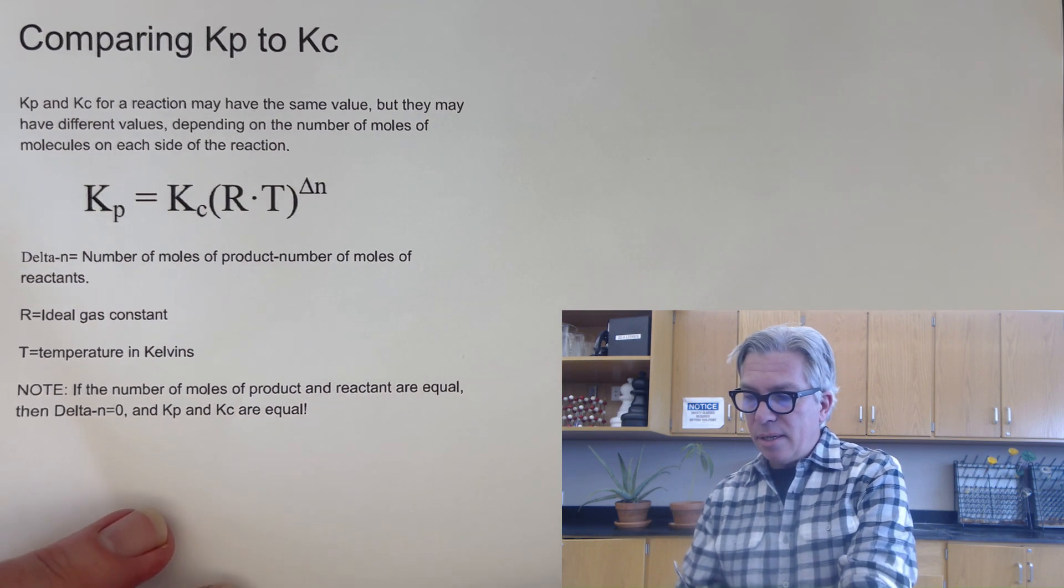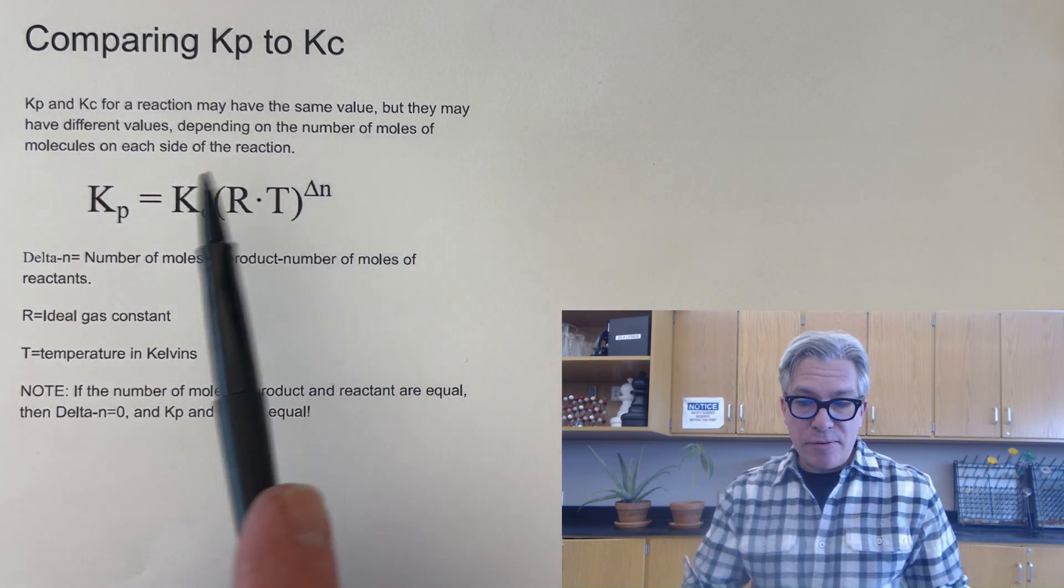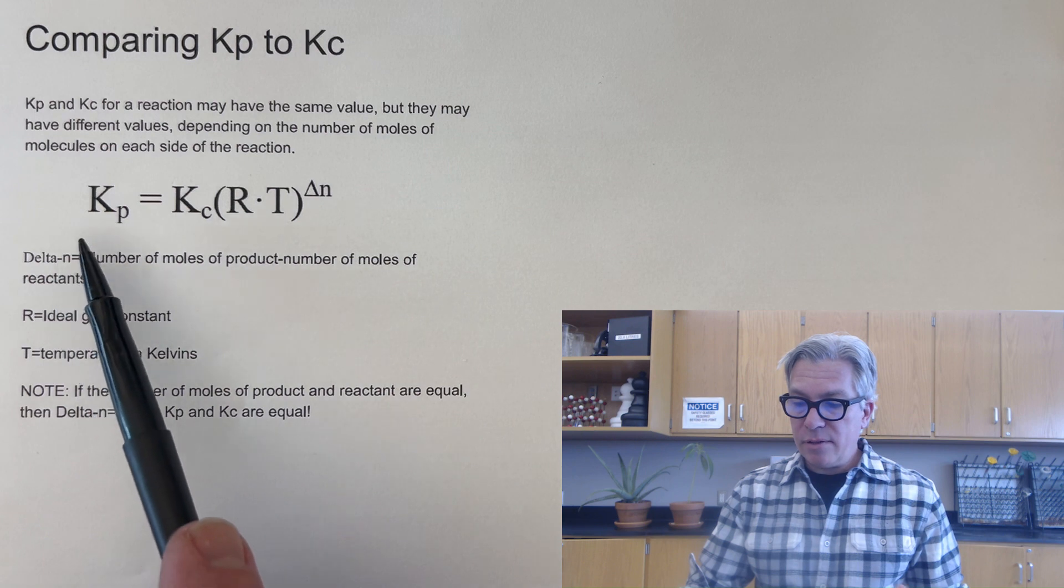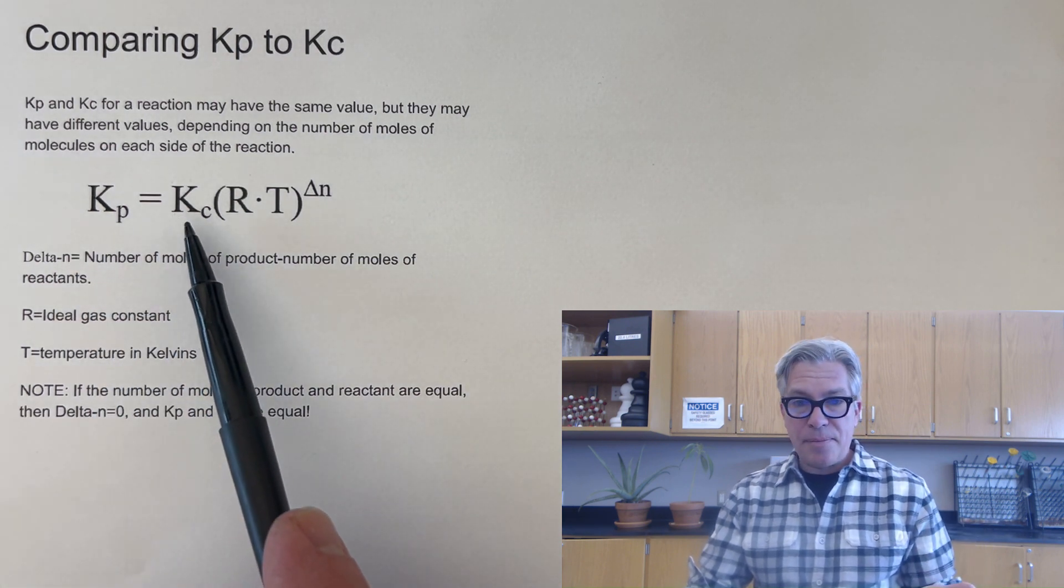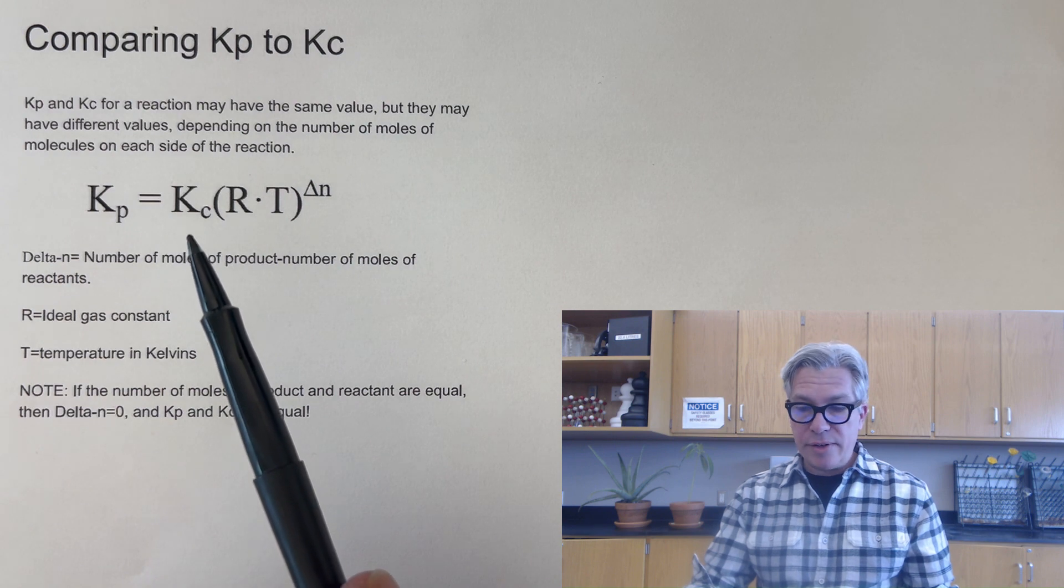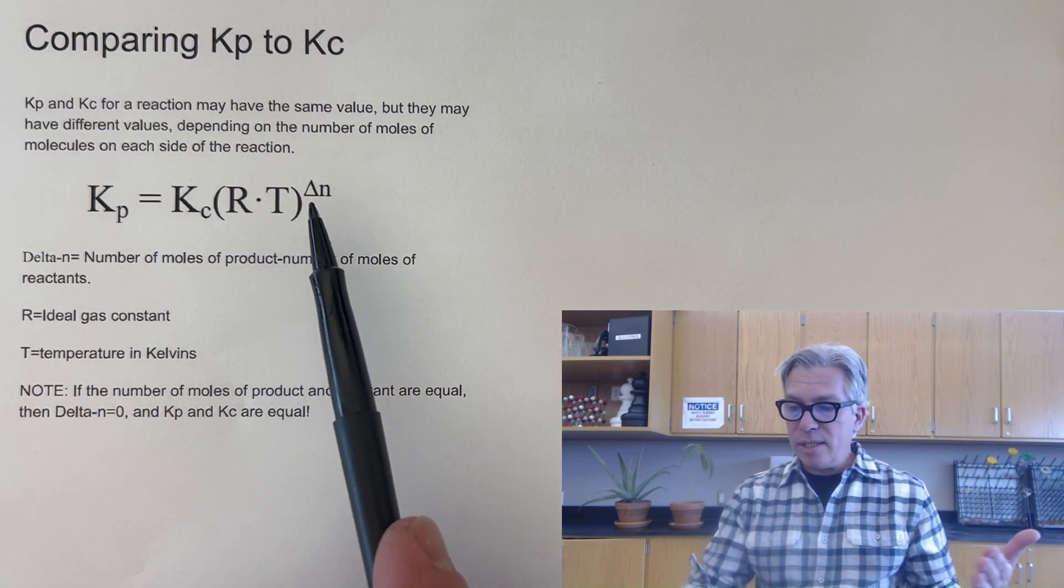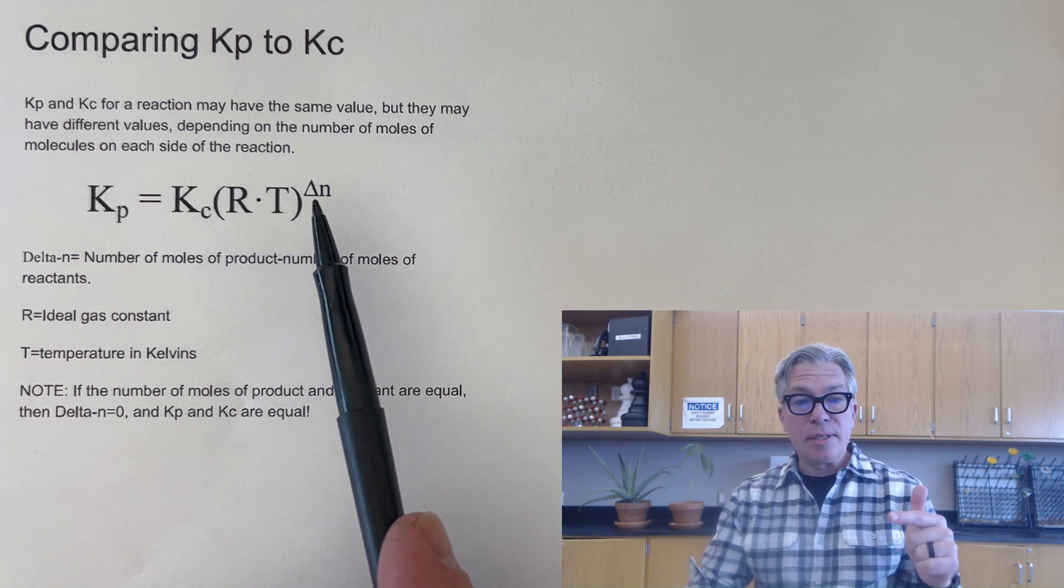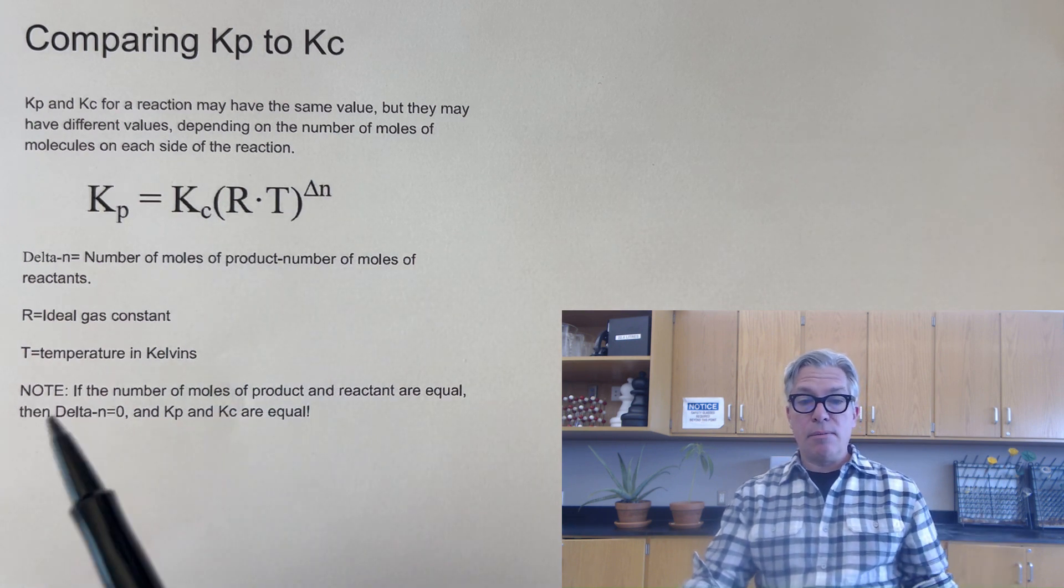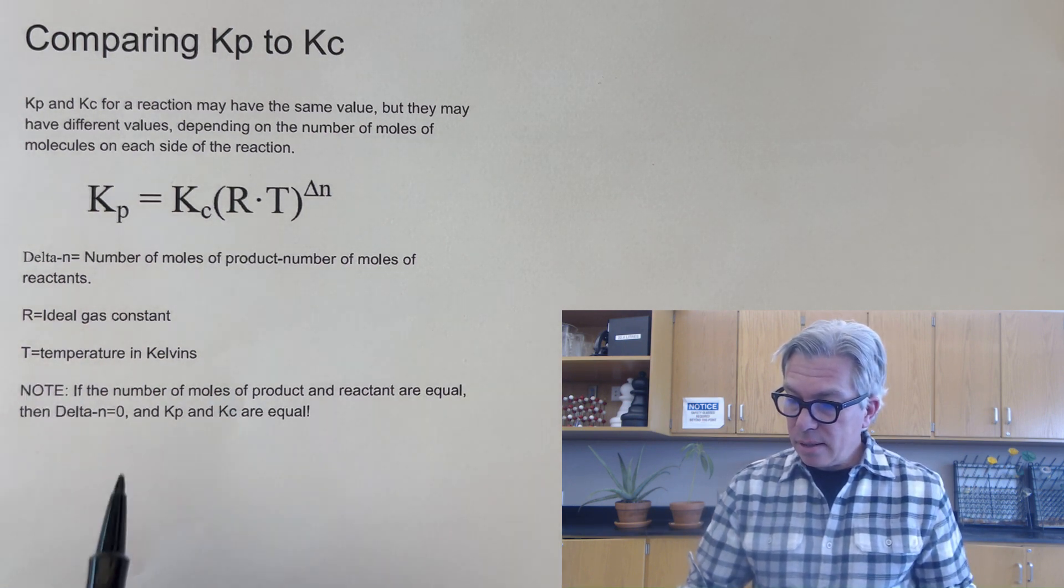There is a formula that relates Kp to Kc for a gaseous equilibrium. They may have the same value, but they may have different values depending on the number of moles of molecules on each side of the reaction. So we have this formula: Kp, whatever that value is, is equal to Kc times R times T to the power of delta n. So in PV equals nRT, if we take out the V and the n and make a concentration out of it, we're still left with an RT unit value somewhere. And that carries throughout the calculation. R is the ideal gas constant, T is the temperature in Kelvins.